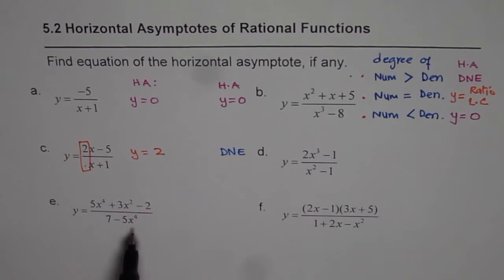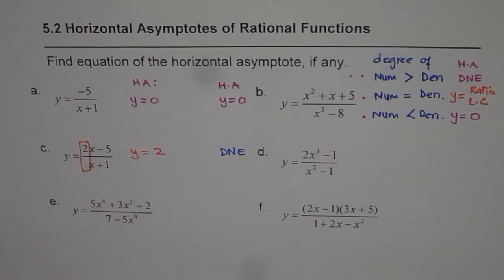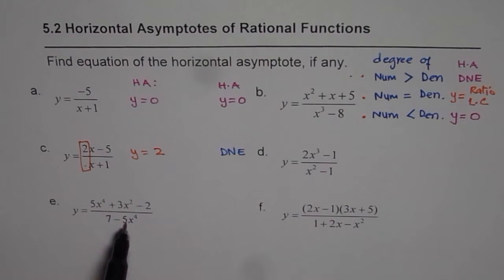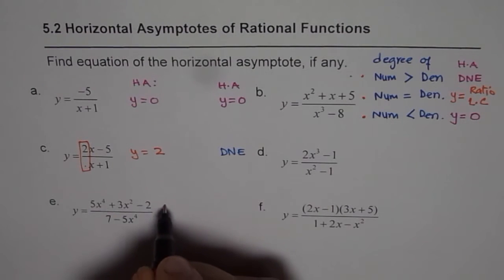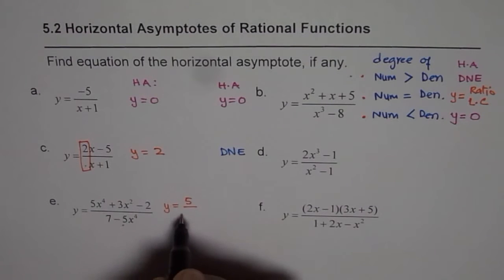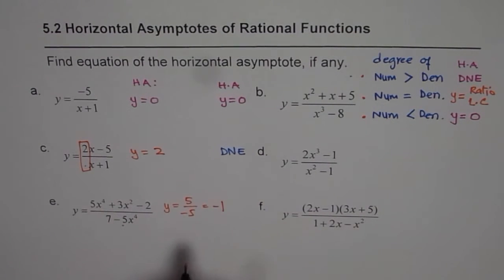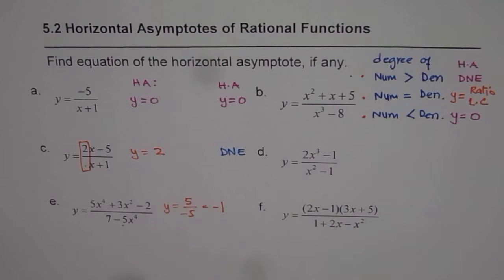For example E, the degree of the numerator and denominator are exactly the same, so we look for the ratio of leading coefficients. The leading terms are 5x to the power of 4 and minus 5x to the power of 4. So the equation is y equals 5 over minus 5, which simplifies to y equals minus 1. That is the horizontal asymptote.